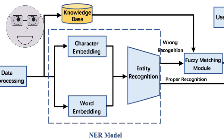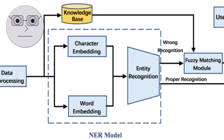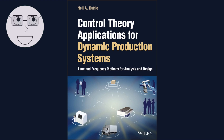In industrial automation, control theory is used to design control systems that regulate the behavior of machines and processes. These systems use feedback loops to adjust the input to a machine or process, ensuring that it operates within safe and efficient parameters. Control theory is also used in many other fields, including automotive engineering, power systems, and biomedical engineering.